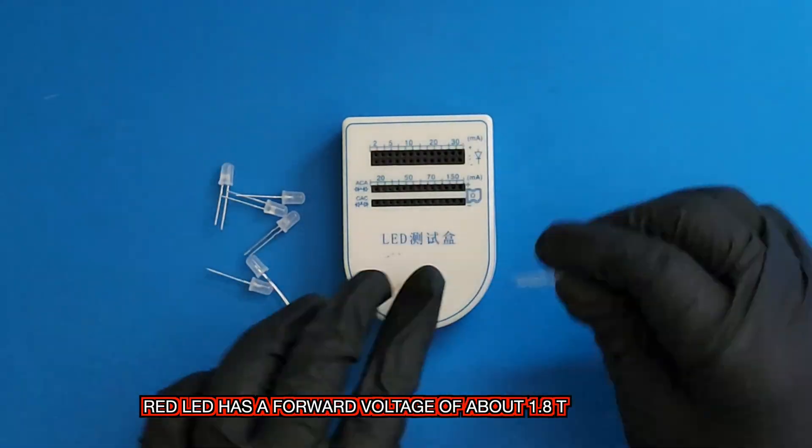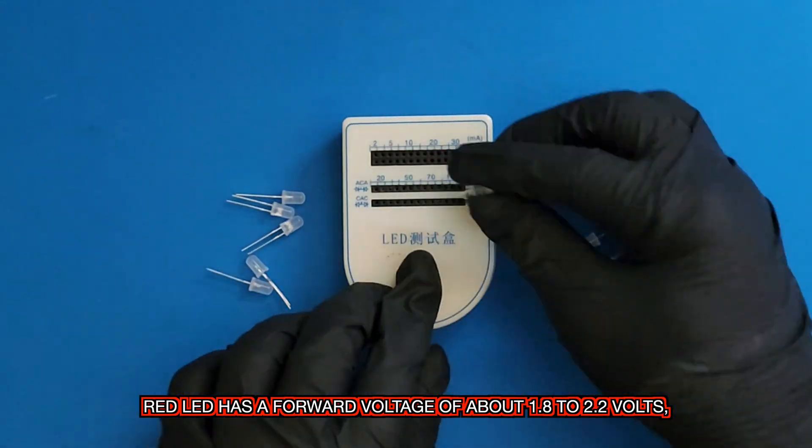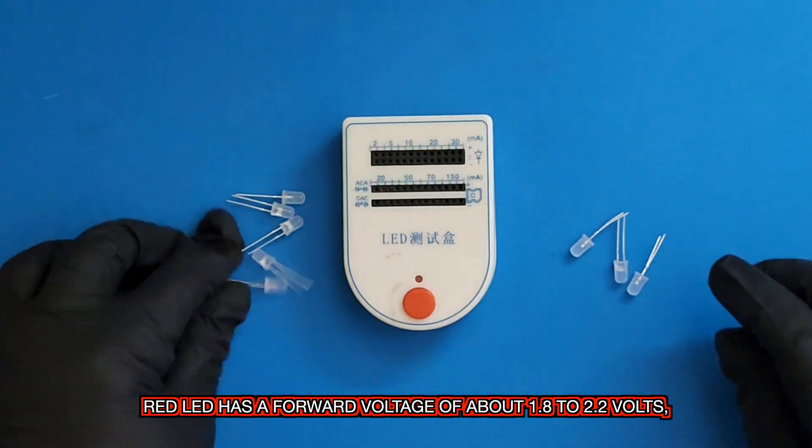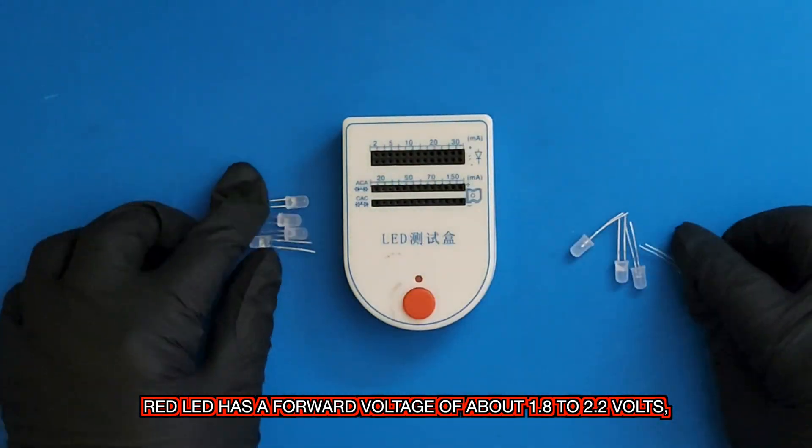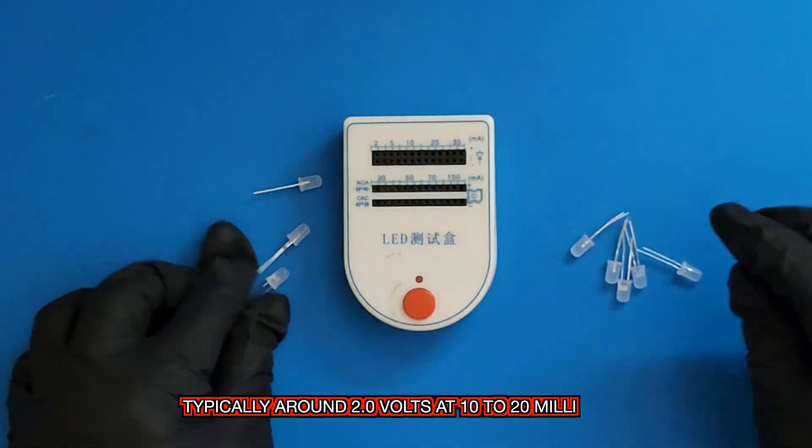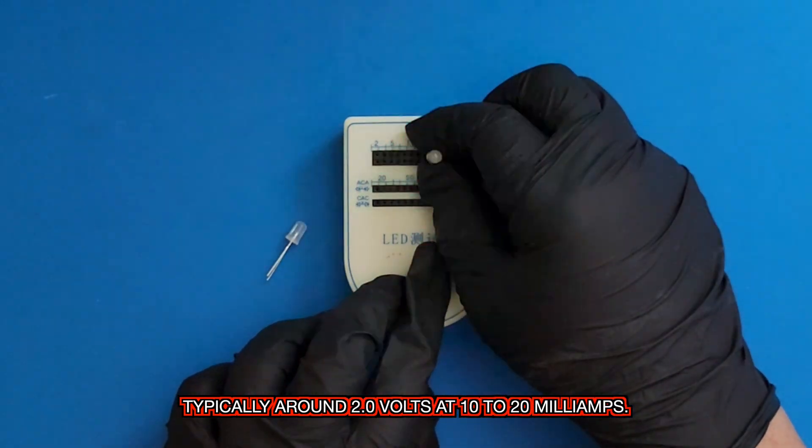Red LED has a forward voltage of about 1.8 volts to 2.2 volts, typically around 2.0 volts at 10 to 20 milliamps.